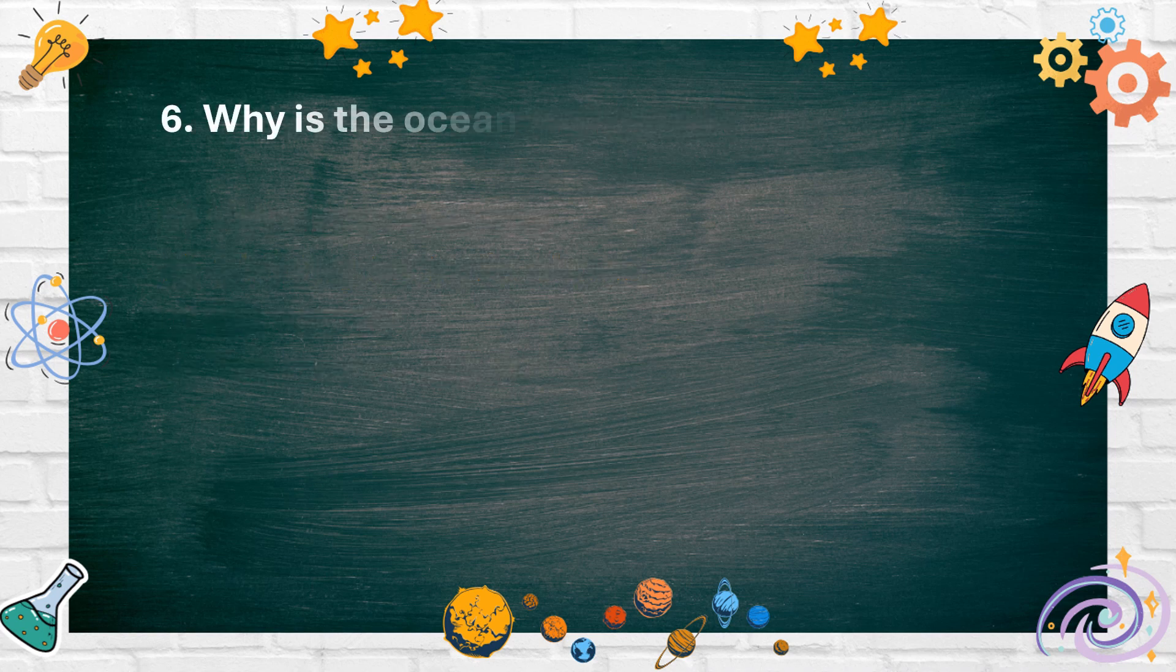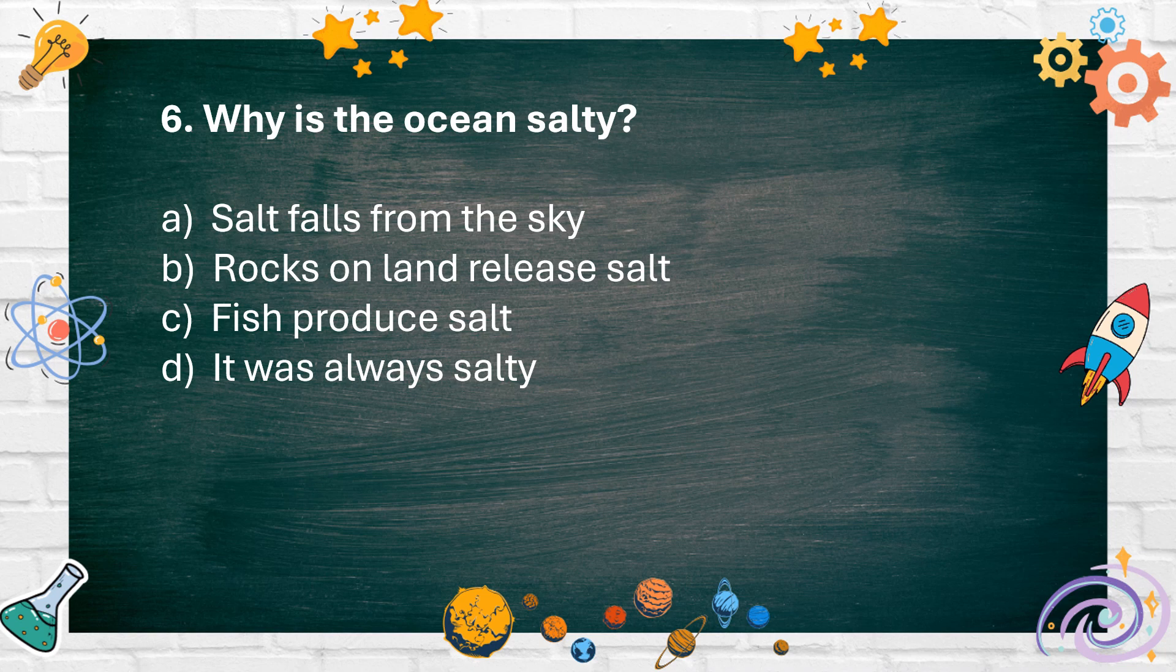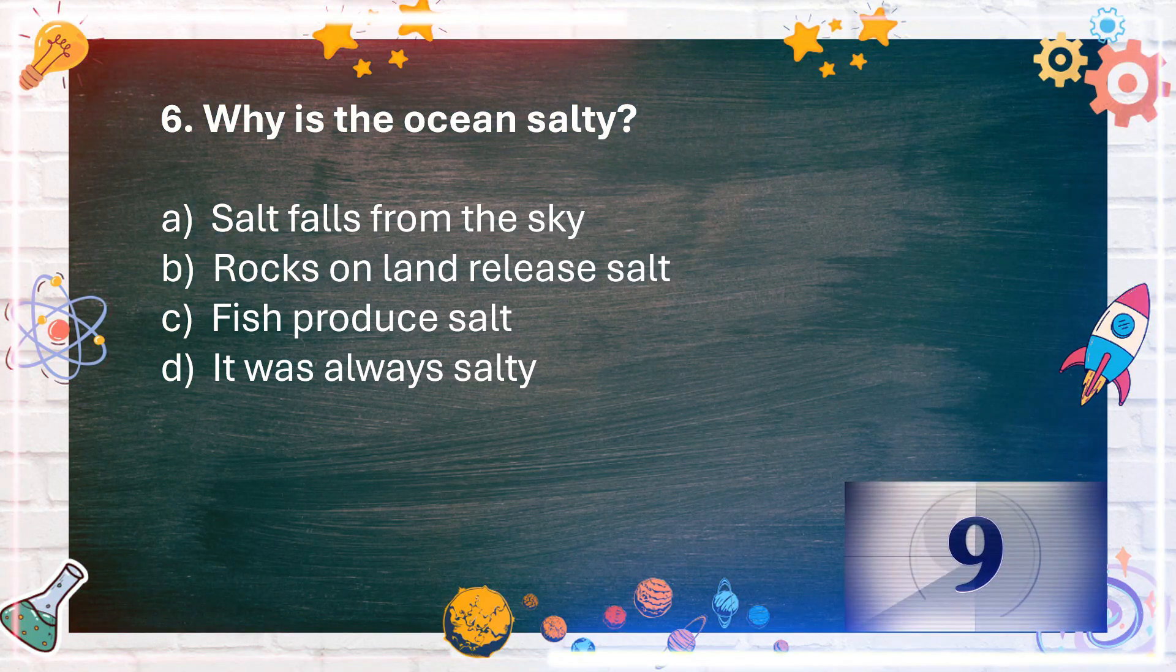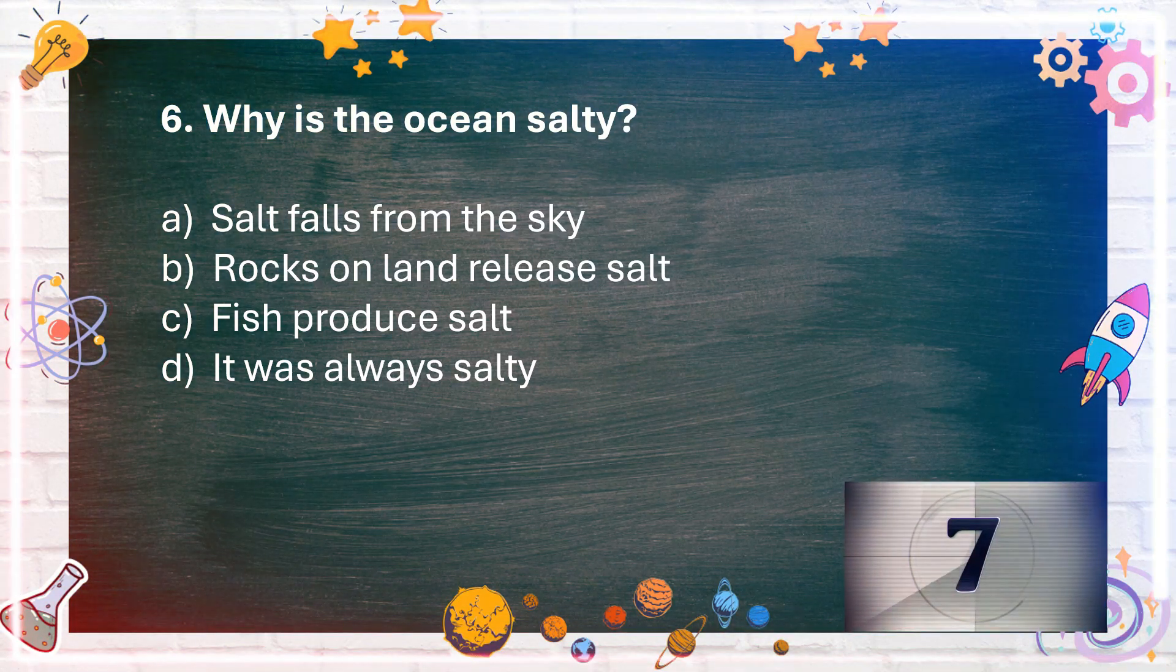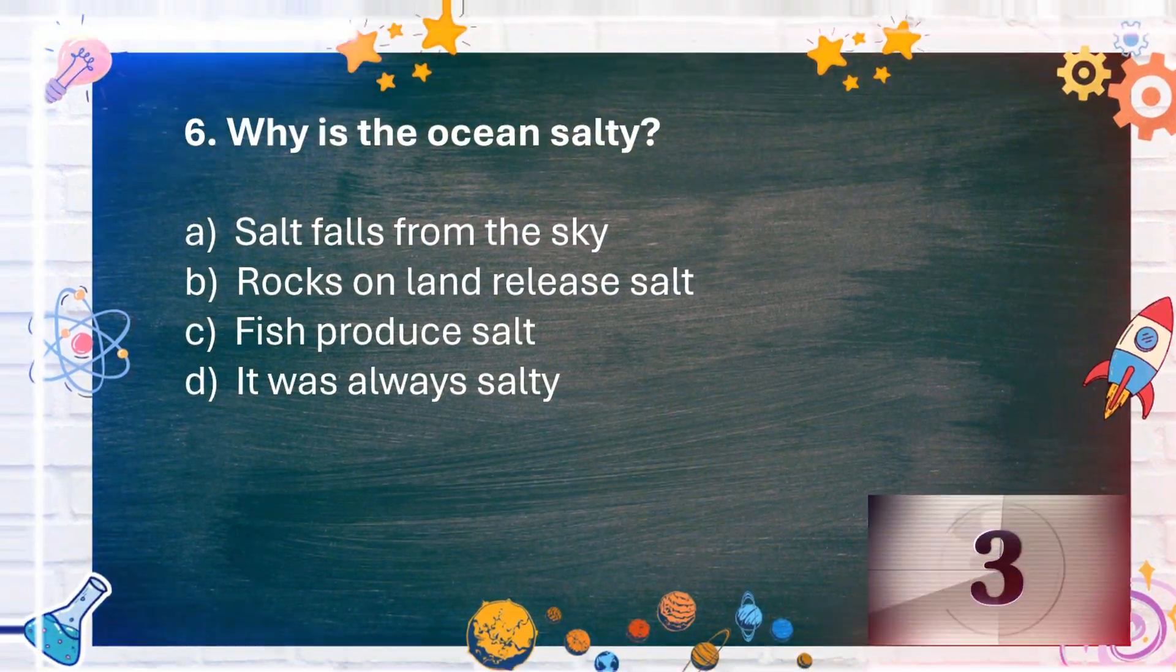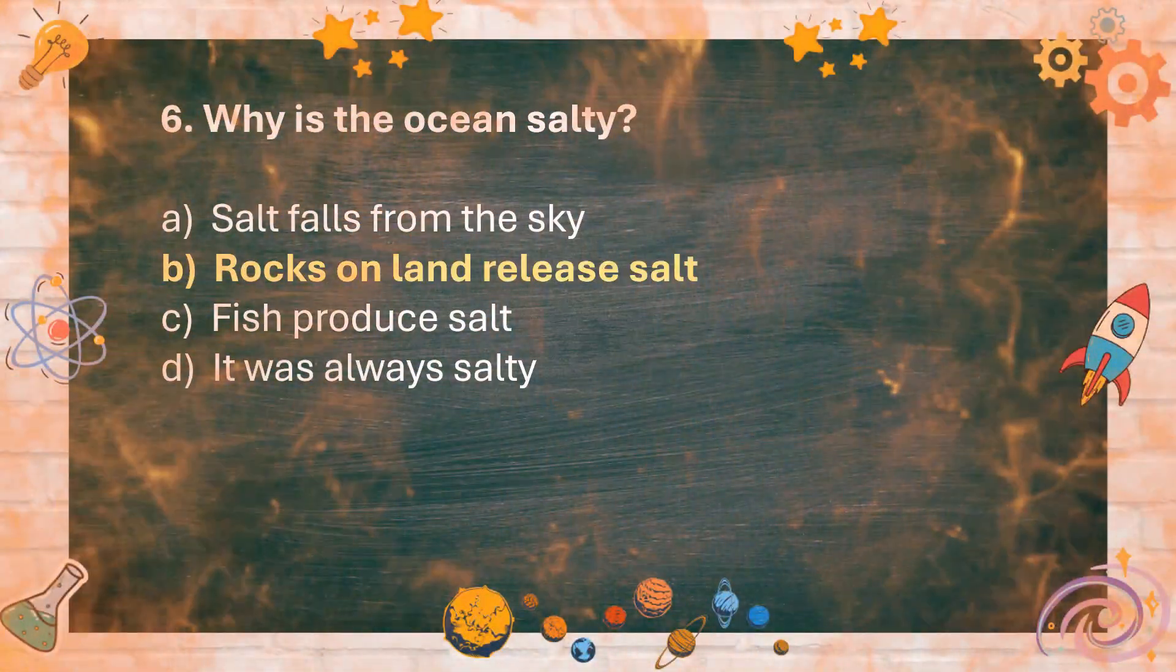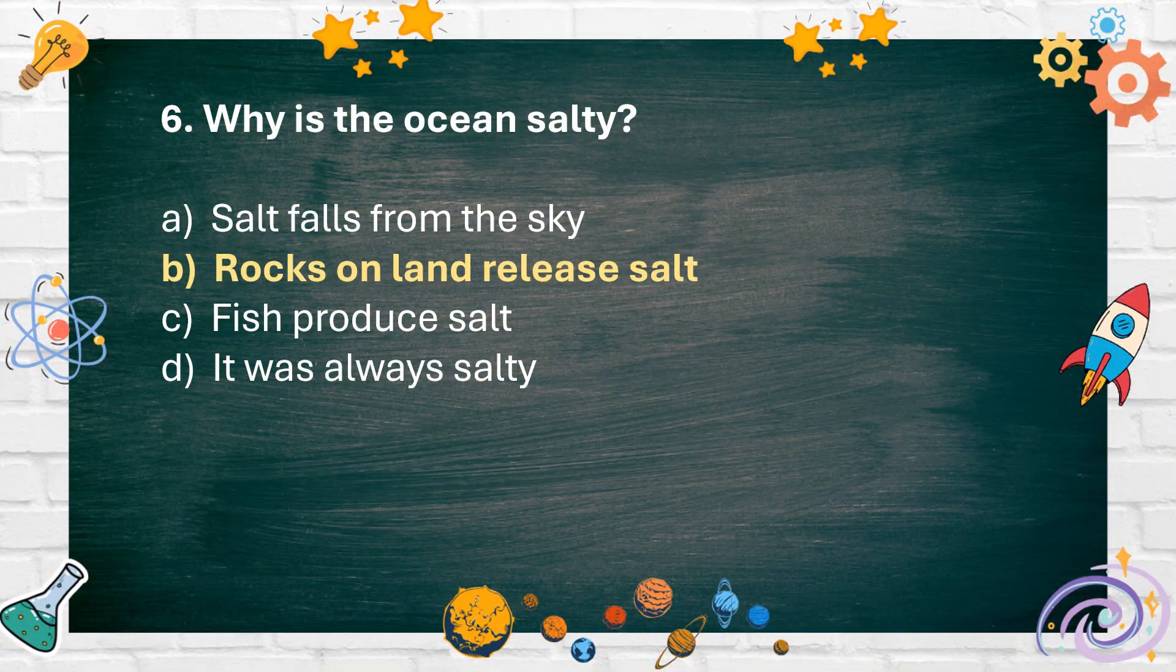Number 6: Why is the ocean salty? A. Salt falls from the sky. B. Rocks on land release salt. C. Fish produce salt. D. It was always salty. The answer is B. Rocks on land release salt.